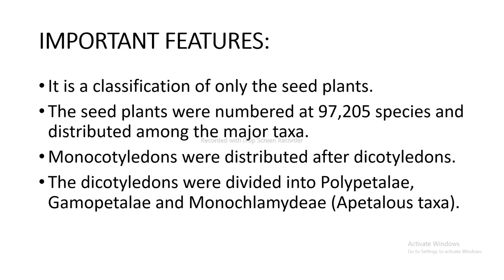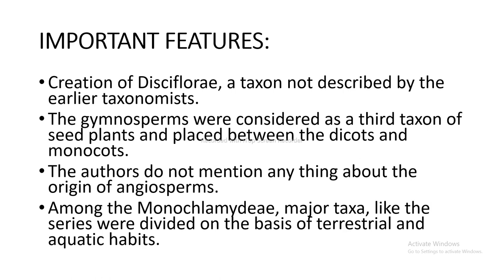Next, I'm going to discuss about the important features. It is a classification of only the seed plants, numbered at 97,205 species distributed among the major taxa. Monocotyledons were placed after Dicotyledons. Dicotyledons were divided into Polypetalae, Gamopetalae, and Monochlamydeae. Gymnosperms were considered as the third taxon of the seed plants, placed between the Dicots and Monocots. The authors do not mention anything about the origin of Angiosperms. Among the Monochlamydeae, major taxa like series were divided on the basis of terrestrial and aquatic habits.